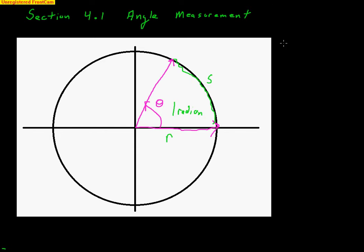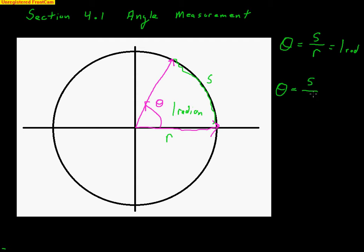The formula that we get for a radian is theta equals s divided by r. This should make sense because when s and r are equal, we would have one radian — whether it's 5 and 5, 6 and 6, 22 and 22, or 9.5 and 9.5. When you divide two equal numbers, you get one. So our big formula for radians is arc length divided by radius.